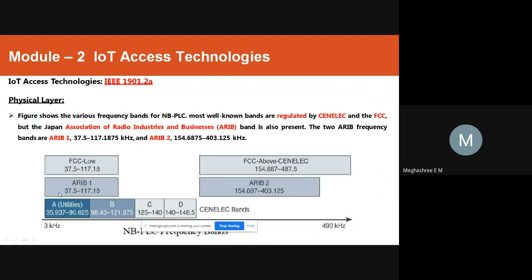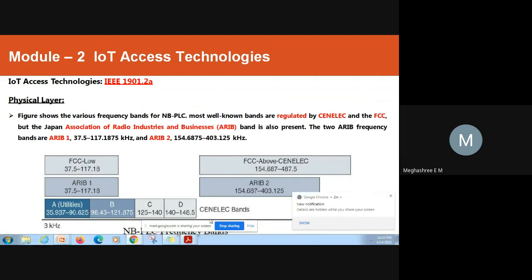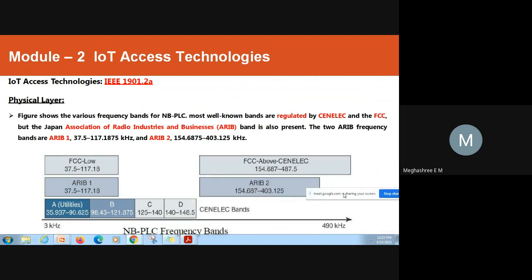The FCC Above CENELEC band is the most useful frequency band because of its higher throughput and reduced interference. The NBPLC frequency bands — FCC Low, Arab, FCC Above CENELEC, and Arab too — are shown in this image, ranging from 3 kilohertz to 490 kilohertz.